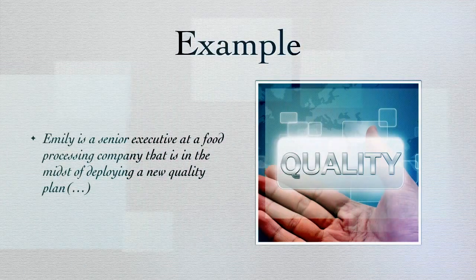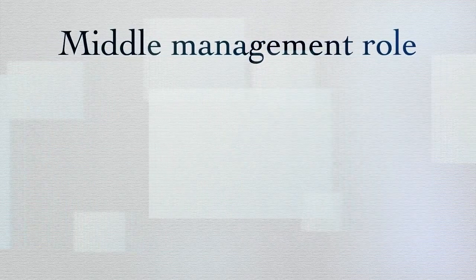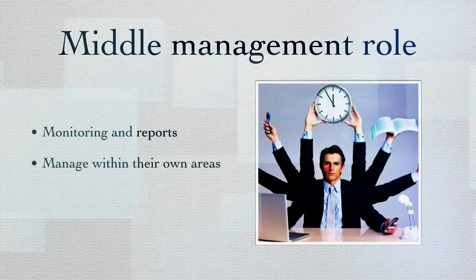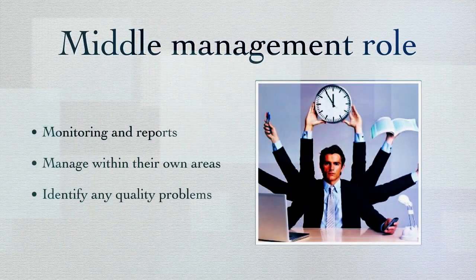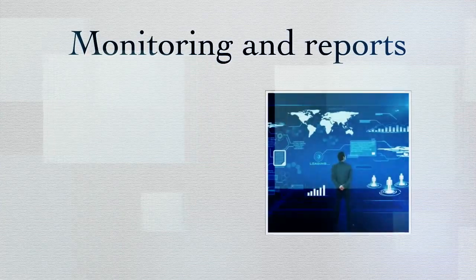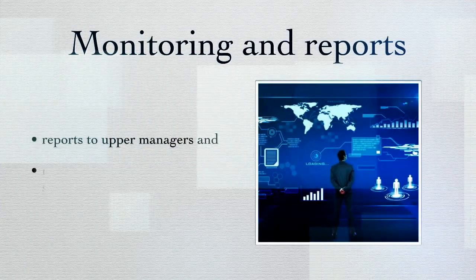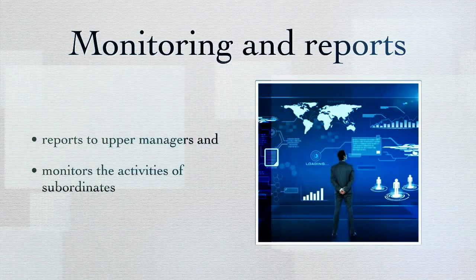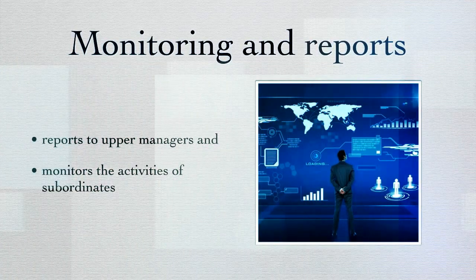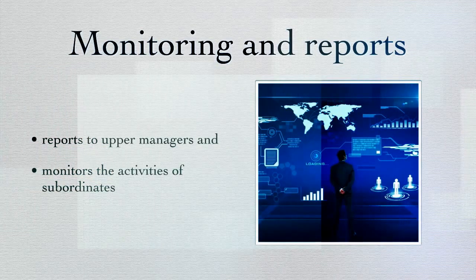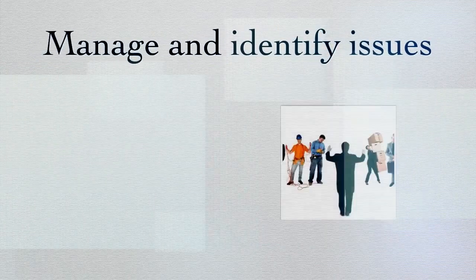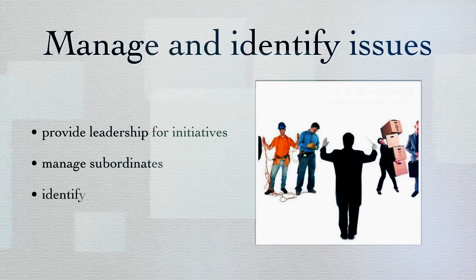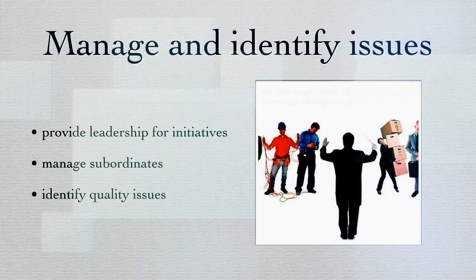The middle management monitors and reports quality management plans, manages their own areas, and helps in identifying quality problems. Middle management usually reports to upper management and monitors the activities of their subordinates. This group consists of individual department directors, account managers, and supervisors, for example. Middle managers have several responsibilities in quality plan development: they provide leadership for organization-wide initiatives or initiatives within their own areas, they identify any quality problems that need addressing, and they work with suppliers and customers as required.